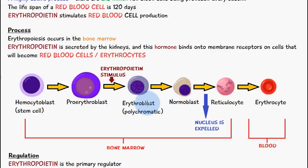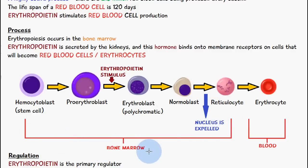The erythroblast will then become a normoblast, from which the nucleus is expelled, and it becomes a reticulocyte. These processes occur in the bone marrow. Following this, the reticulocyte forms the erythrocyte, which then goes into the blood. This is the process of erythropoiesis.